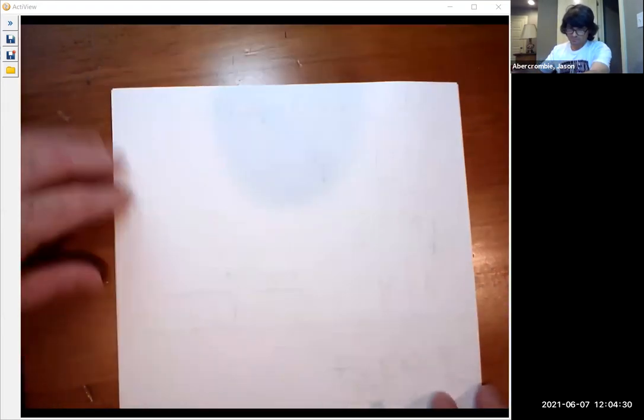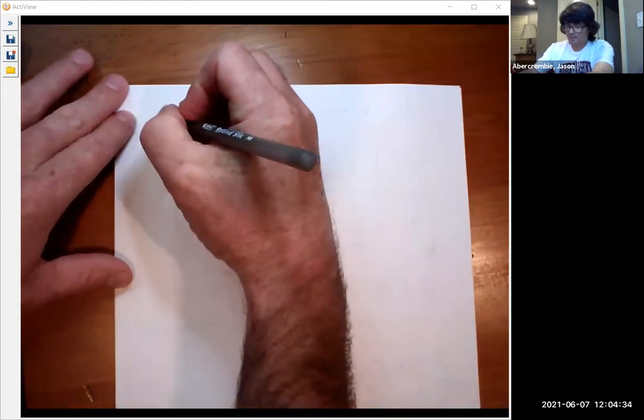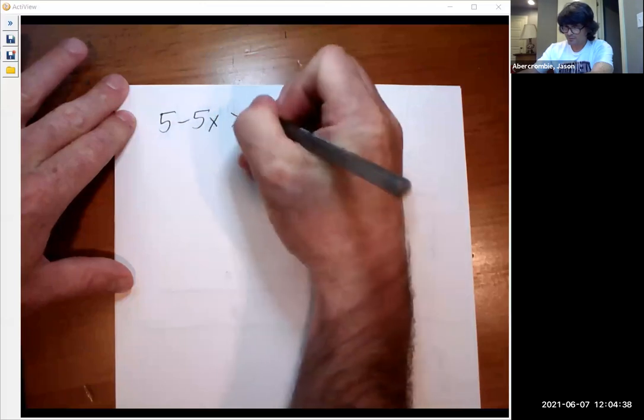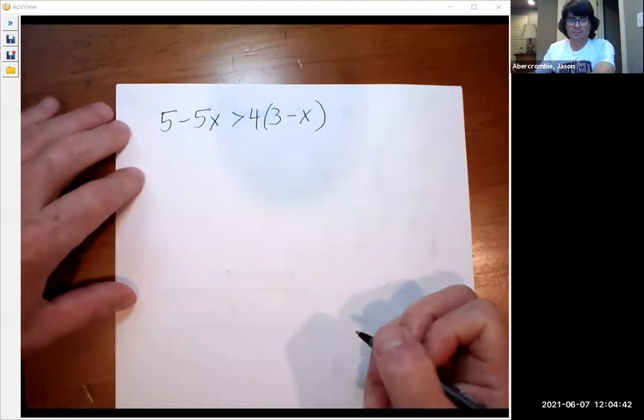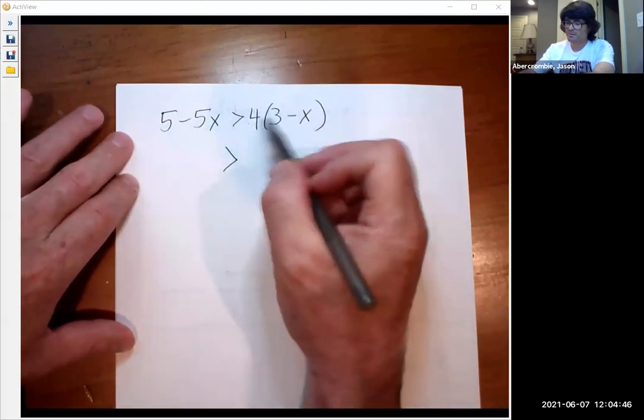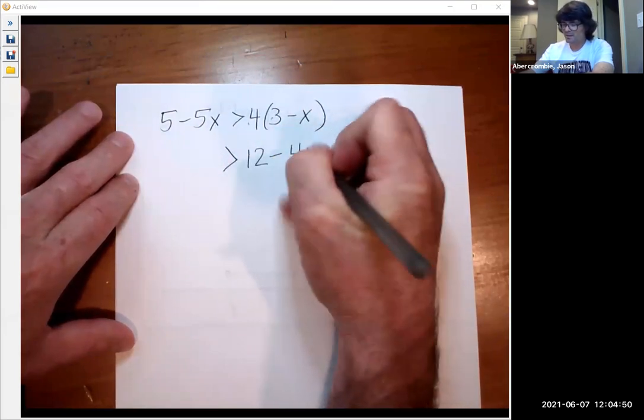Sometimes you'll have to use the distributive property. So something like 5 minus 5x bigger than 4 times 3 minus x. And so here, I'm going to utilize the distributive property. 4 times 3 is 12. 4 times negative x, negative 4x.